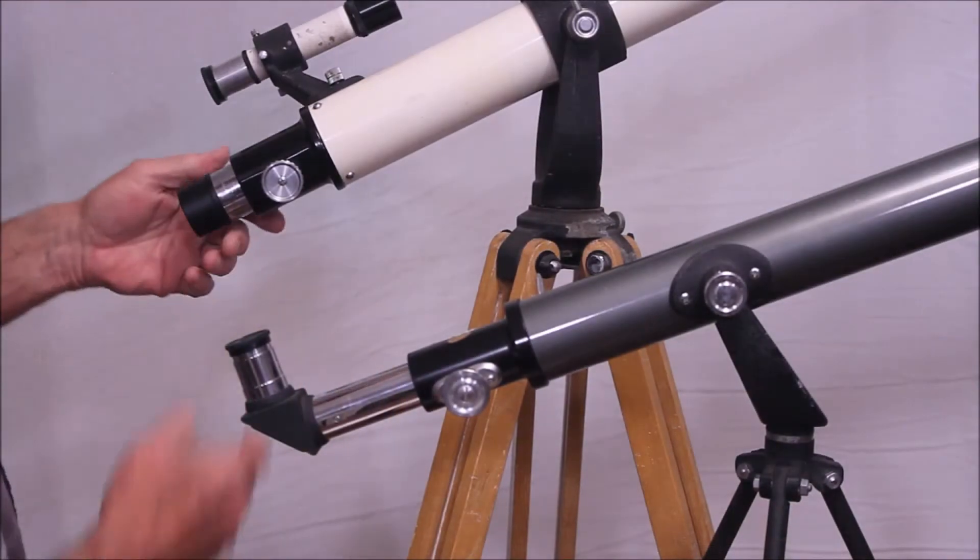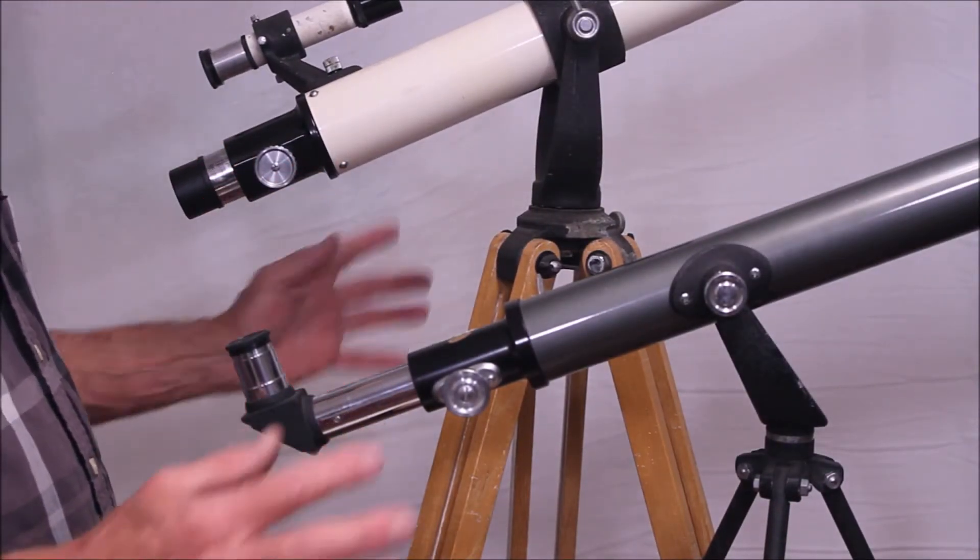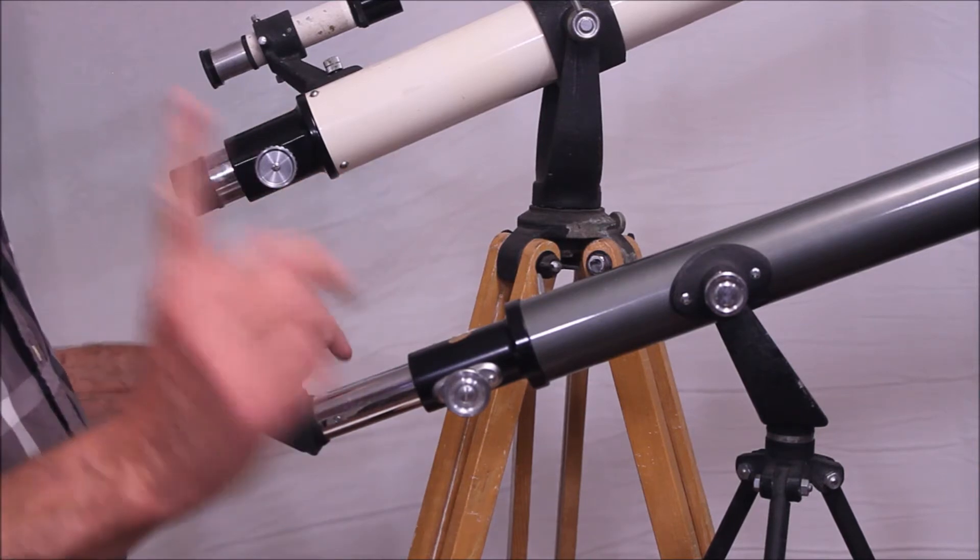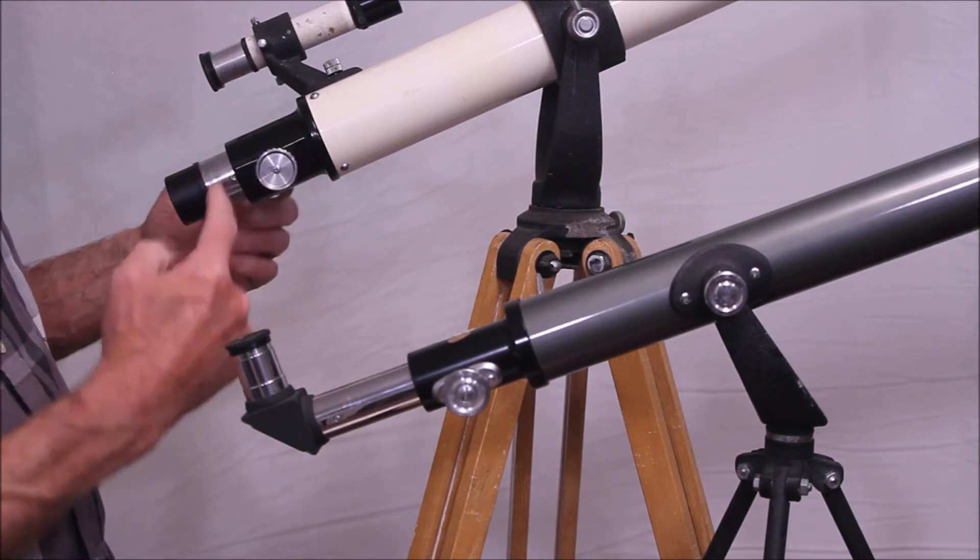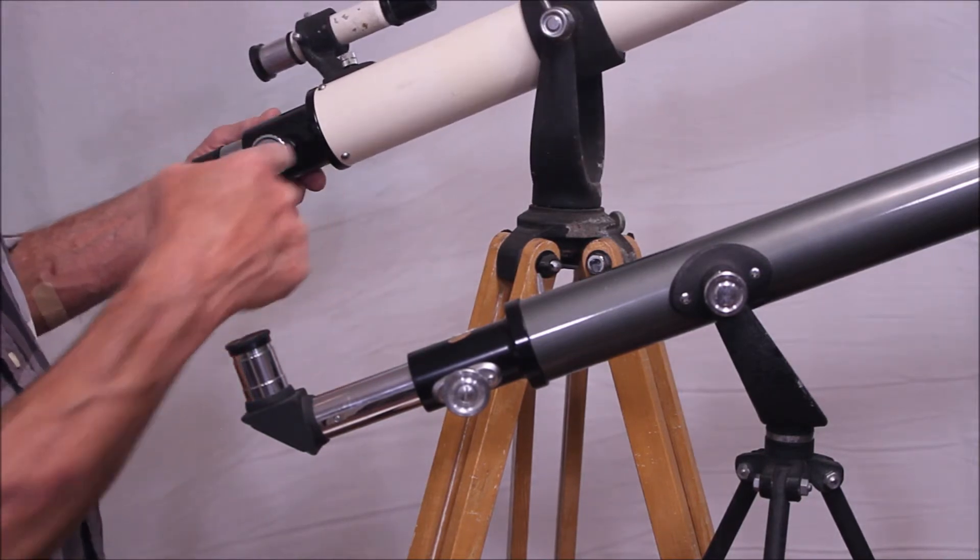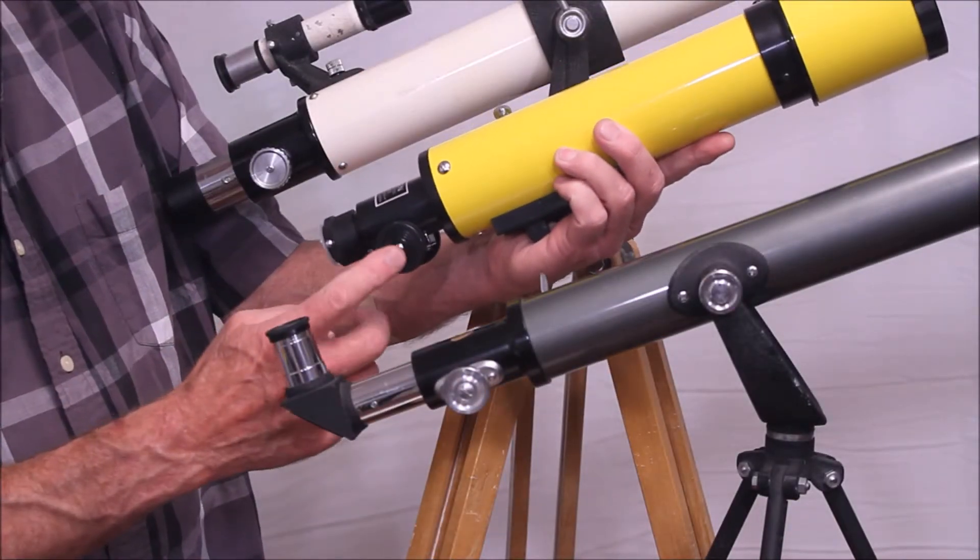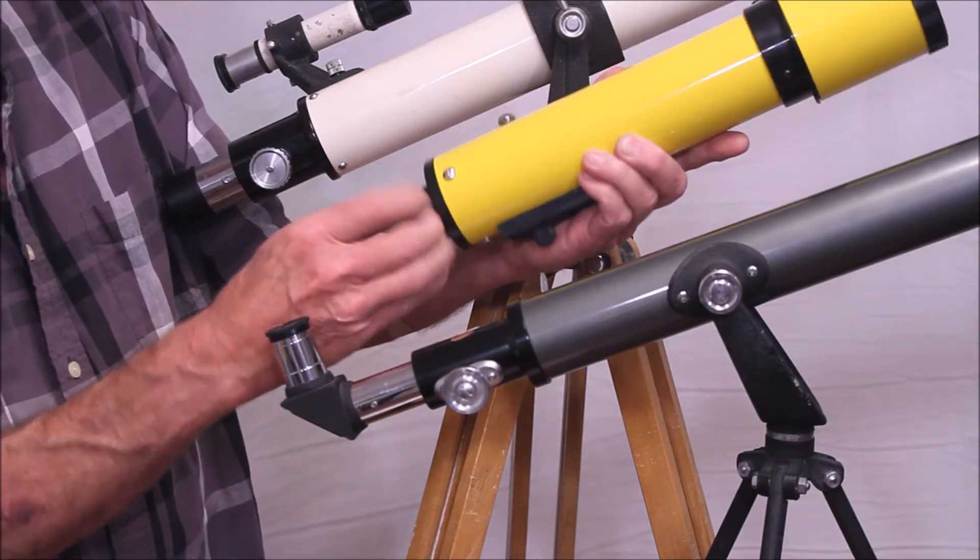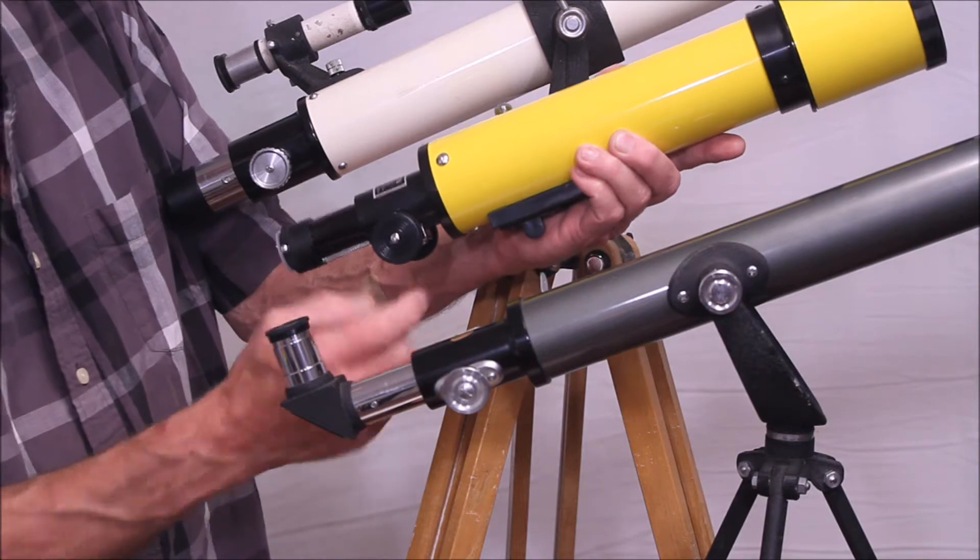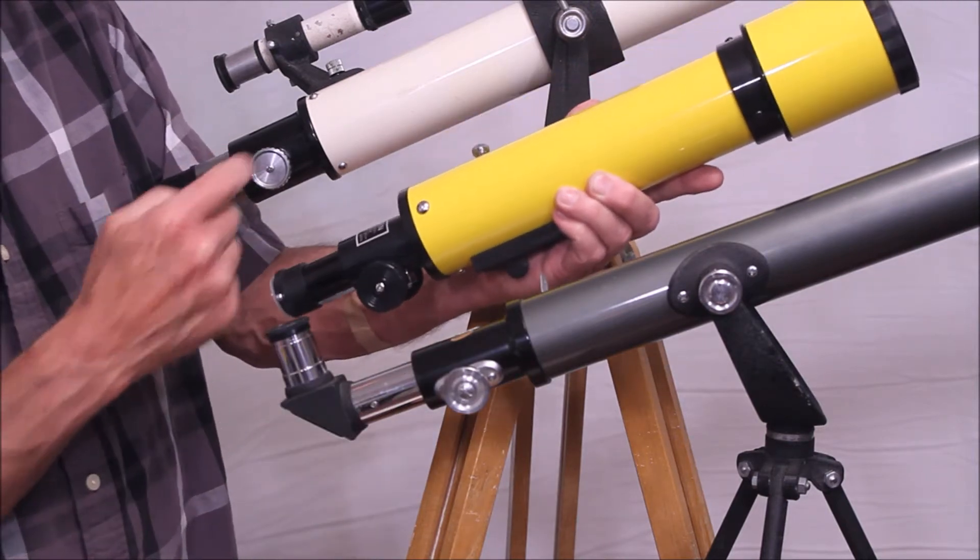The primary reason I grouped these two scopes together is they have almost nothing in common except for this. Both of them have a side-mounted focuser. See how this focuser comes out kind of through the middle here and like this is the same thing.